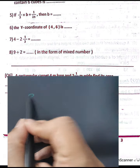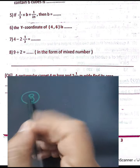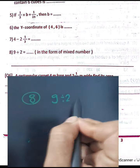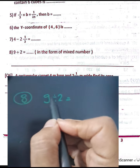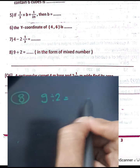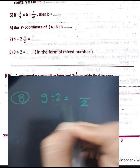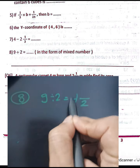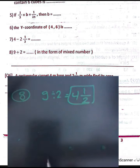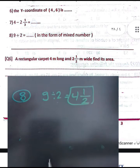Question eight: convert nine divided by two to a mixed number. Nine divided by two equals 4 with a remainder of 1. Written as a mixed number: four and one-half.